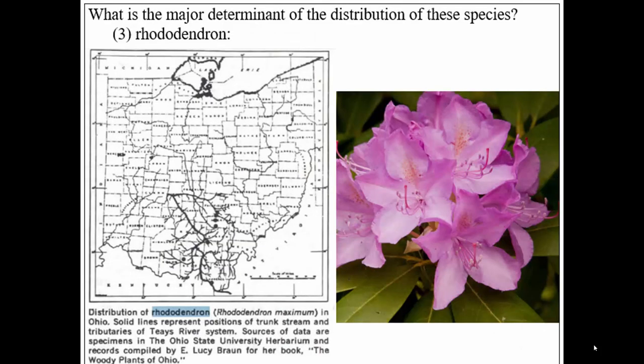And finally, in eastern Ohio in the sandstone area, in restricted locations, we have this big evergreen shrub with large leaves called rhododendron. The distribution of rhododendron tracks fairly closely with the distribution of an ancient river system called the Teays River. It's believed that it occurred along that river system, and its distribution mirrors where the river was.